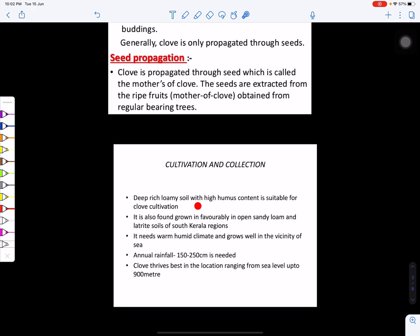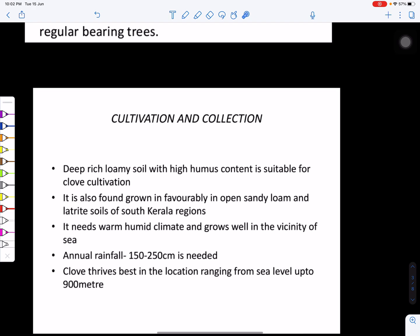For its cultivation we need to have rich loamy soil with high humus content - it should be fertile. It can also be grown in open sandy loam and lateritic soils of south Kerala regions. It needs warm humid climate and may grow near the sea.